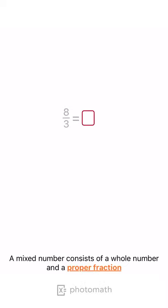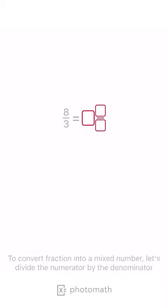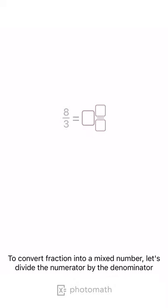A mixed number consists of a whole number and a proper fraction. To convert a fraction into a mixed number, let's divide the numerator by the denominator.